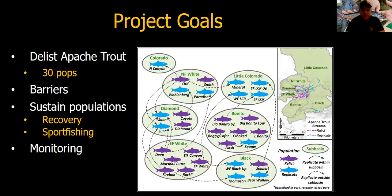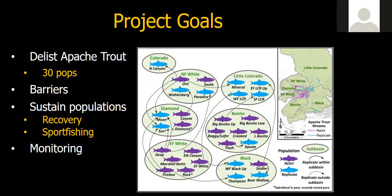As with all listed species protected by the Endangered Species Act, the primary goal is to recover and delist them. In the case of Apache trout, the goal is to do so after establishing three populations of genetically pure Apache trout. Other central goals are to establish and maintain barriers to keep invasive fish away from recovery populations, sustain separate populations for recovery and recreational sport fishing, and continue to monitor populations of pure Apache trout.